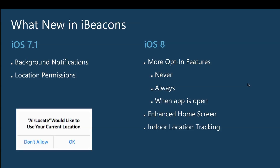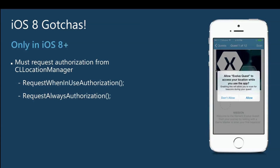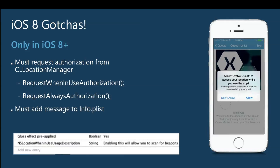The iOS 8 gotcha is to make sure that you always call request when in use authorization, and that you add that information to your info plist. If you don't, you won't be notified of what's going on and it just won't work — I was very frustrated when I upgraded to iOS 8 originally. For Android development, inside the sample application you'll find more involved samples of actively scanning, displaying different bits of information, using just the core location or the Estimote SDK for Android. I call it iBeacons Everywhere — it's on my GitHub.